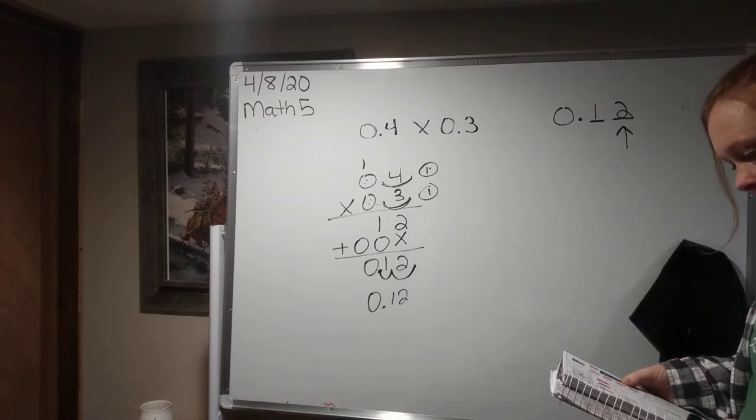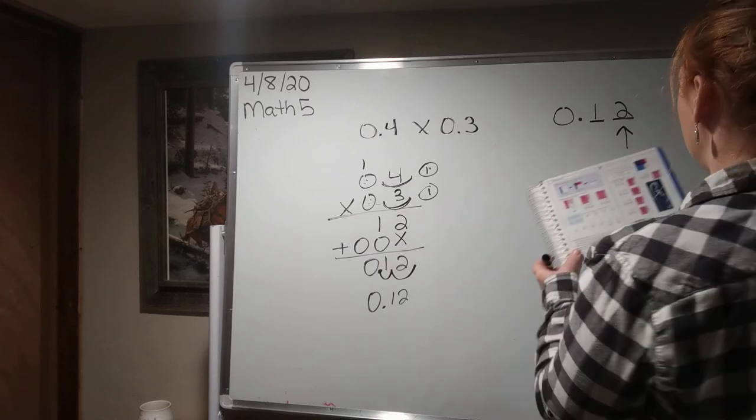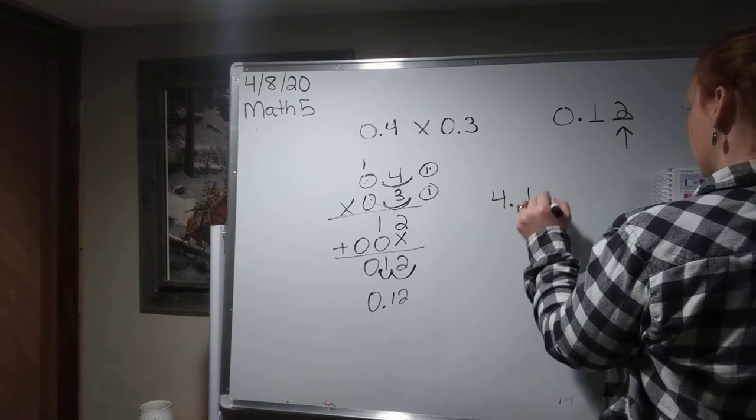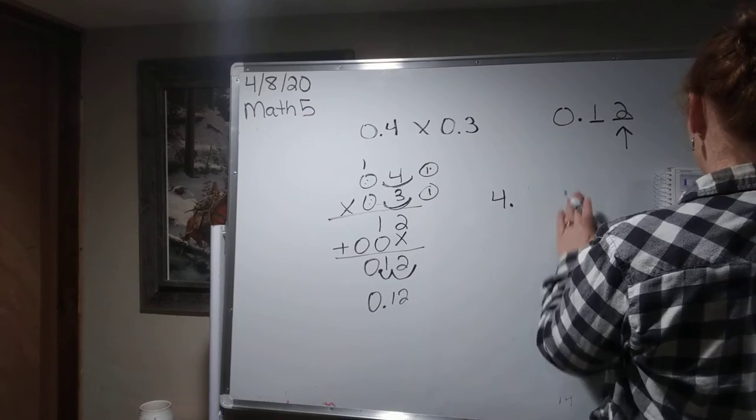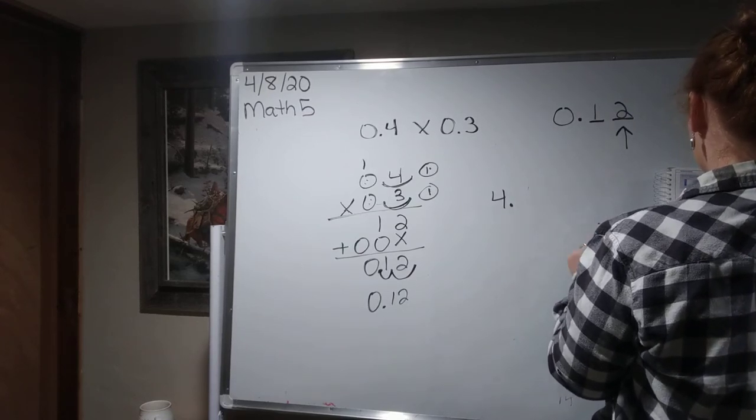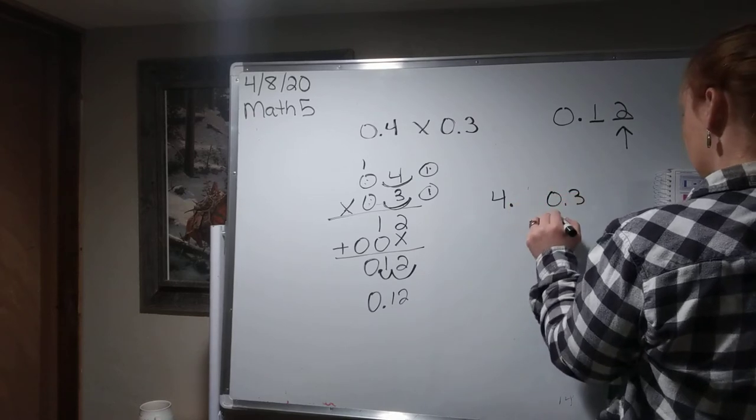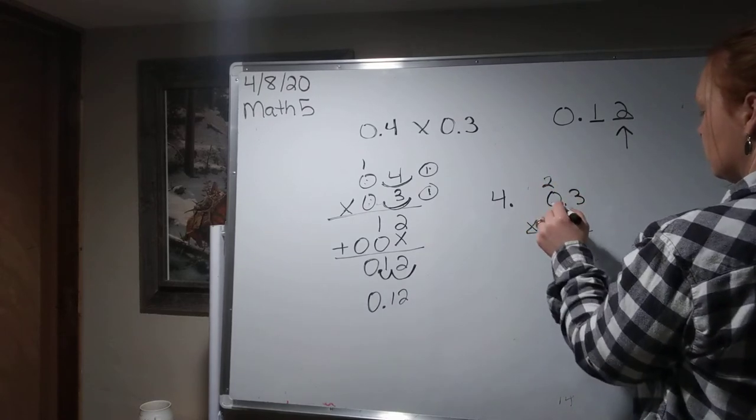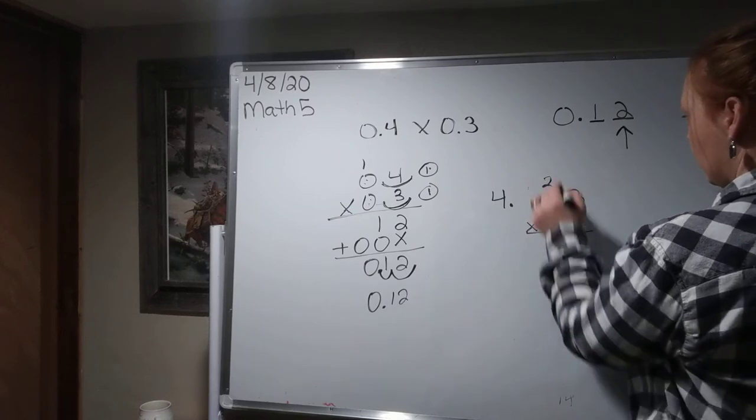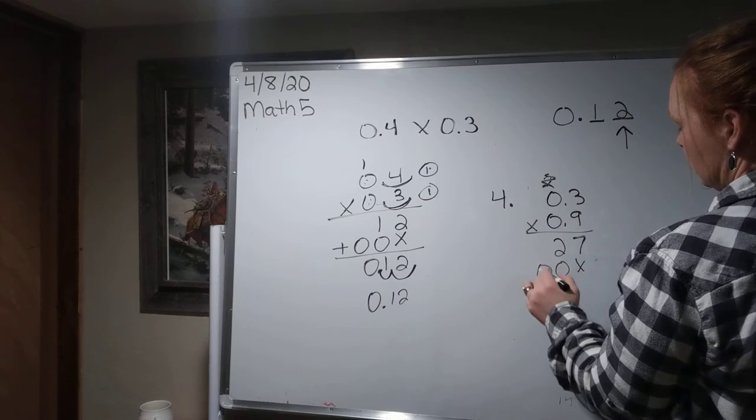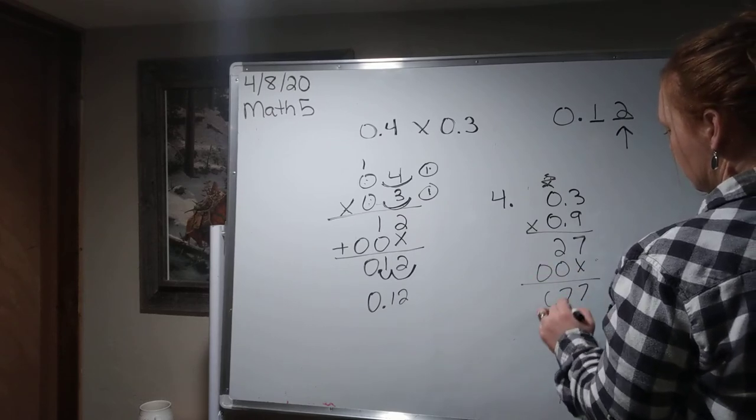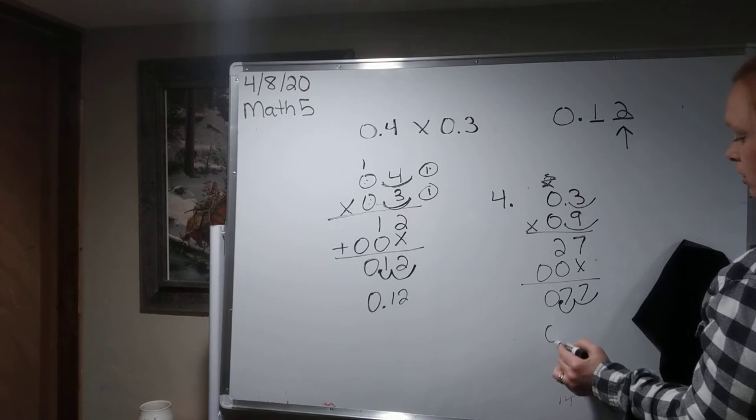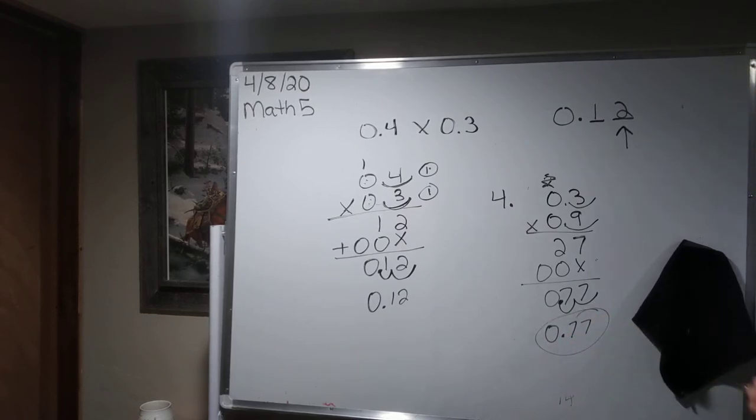So let's go ahead and let's do number 4 on your worksheet for some practice. Okay, so, 1 and 7, oh, wrong problem. Let's do, I'm going to go ahead and write that problem. 9 times 3 is 27. 1, 2, mark out my 1's, 0, 0, 0, okay, I have 1, 2, so 1, 2, so 0 and 77 hundredths is my answer.